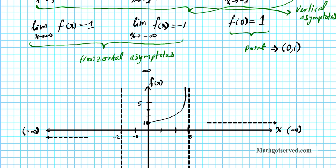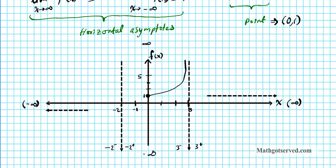So now this function: starting from (0, 1) it approaches the vertical asymptote at 3. From the right, as it approaches 3, it also goes to infinity. And as x approaches positive infinity, the function approaches 1. So the curve goes in that orientation approaching the horizontal asymptote.